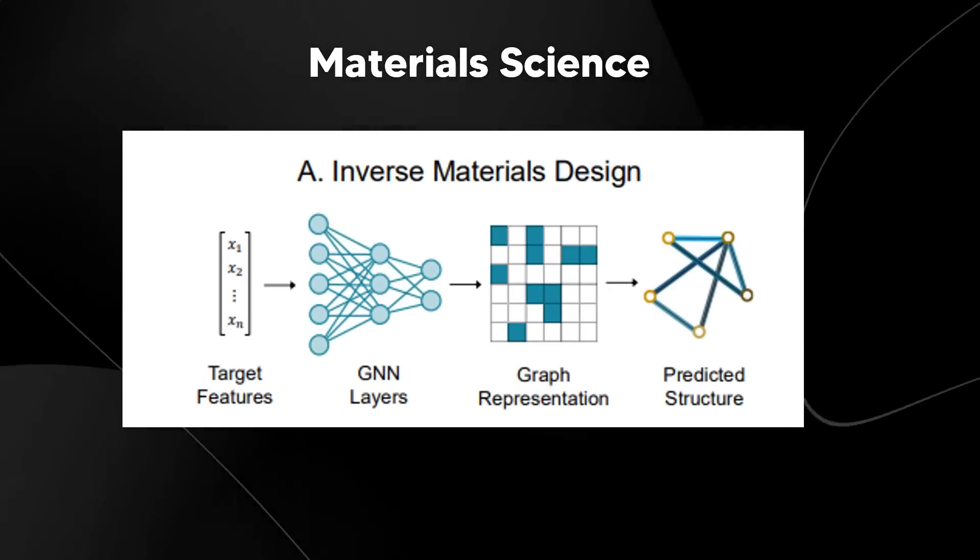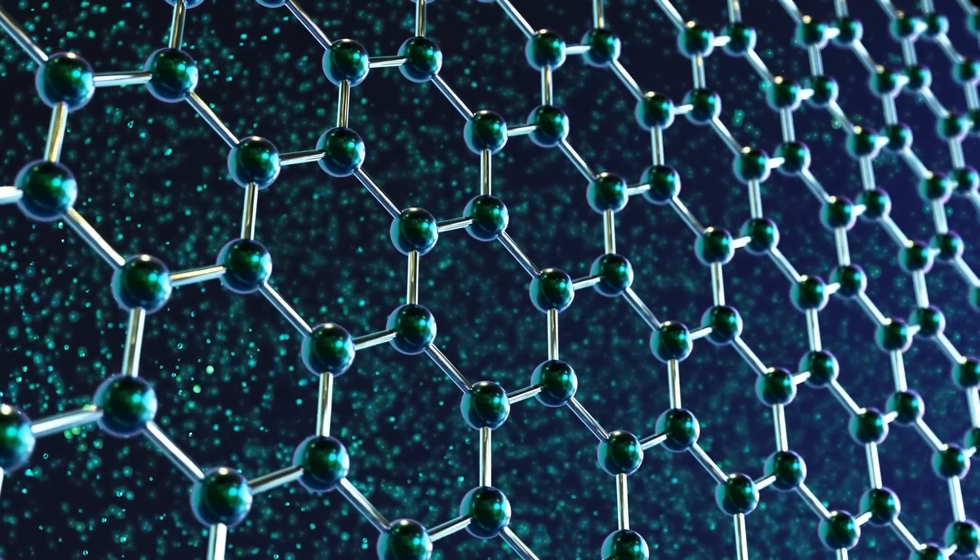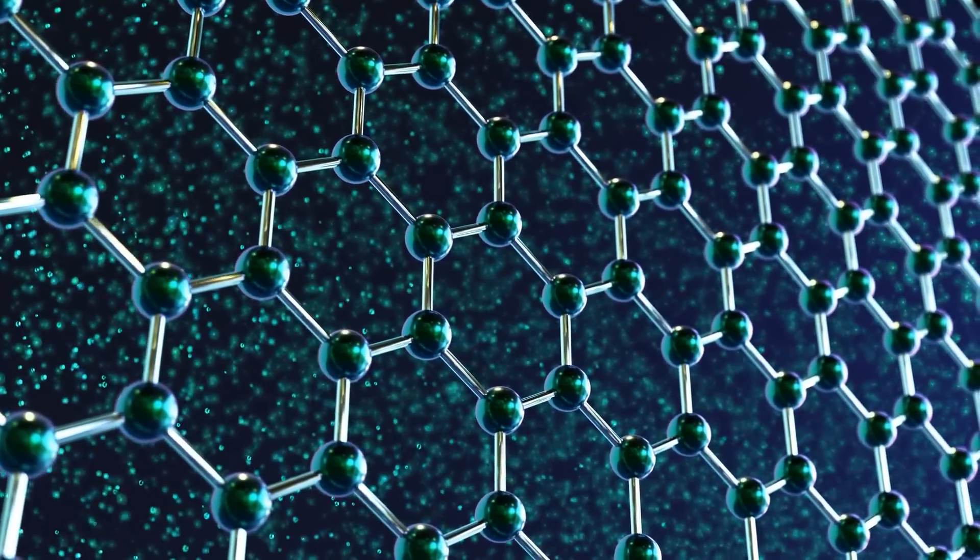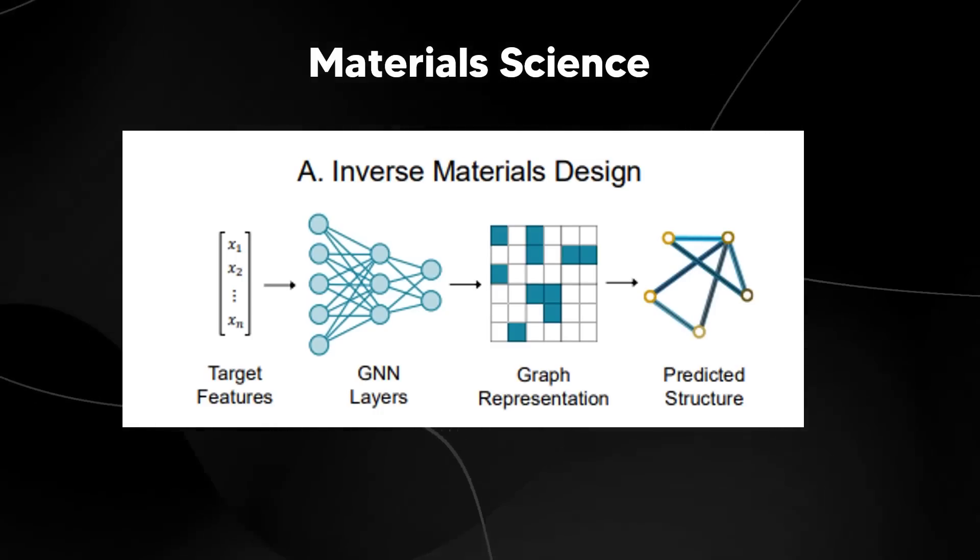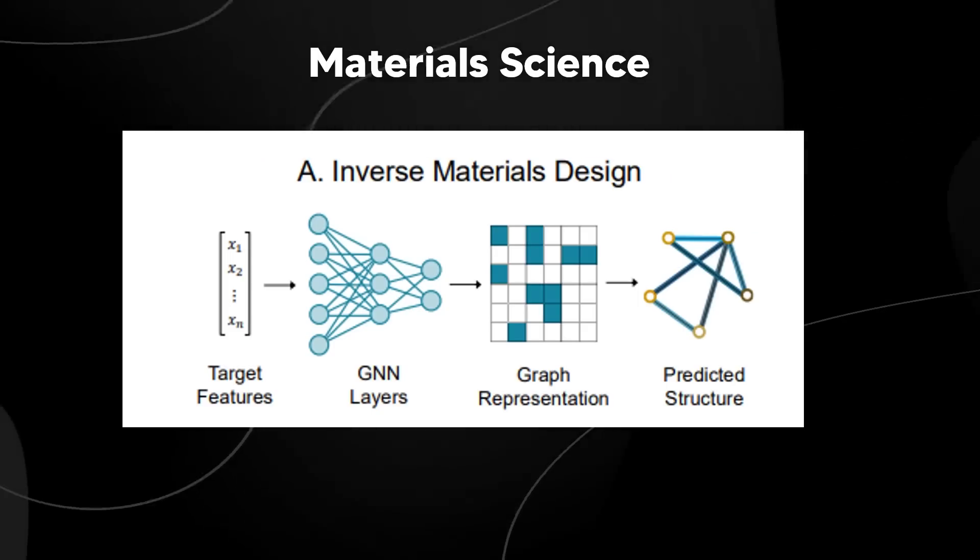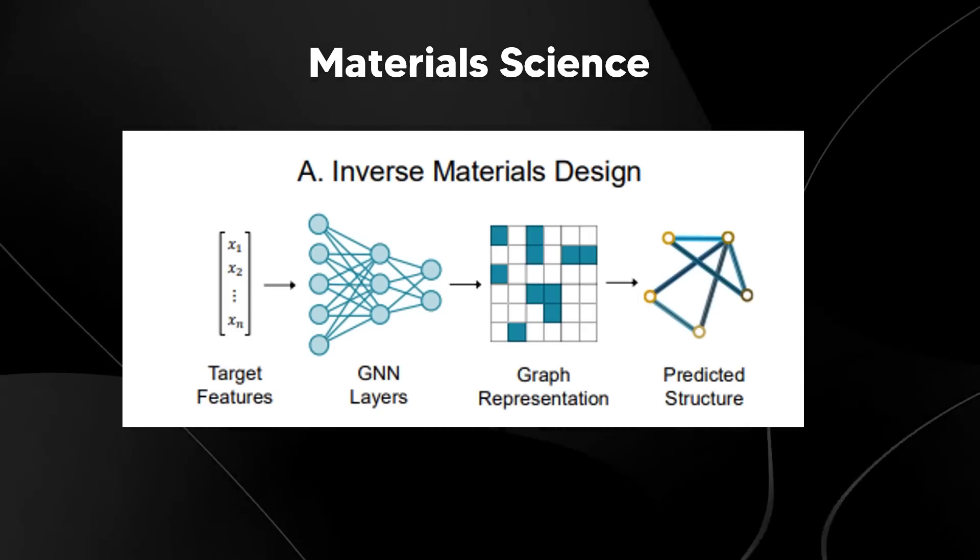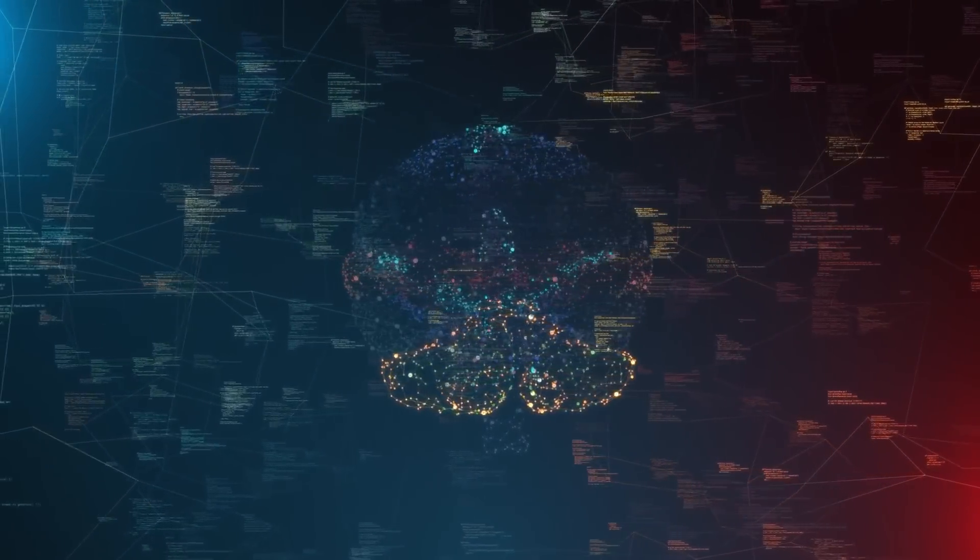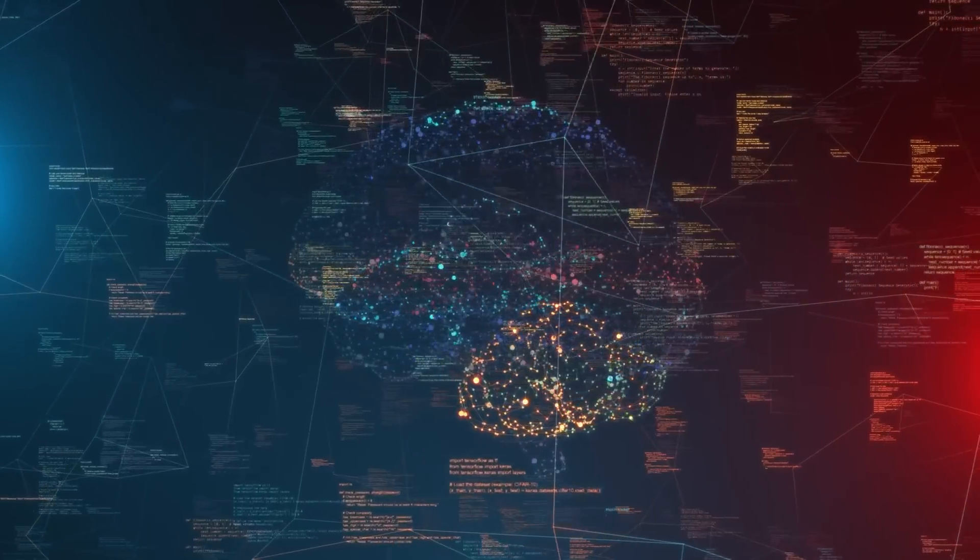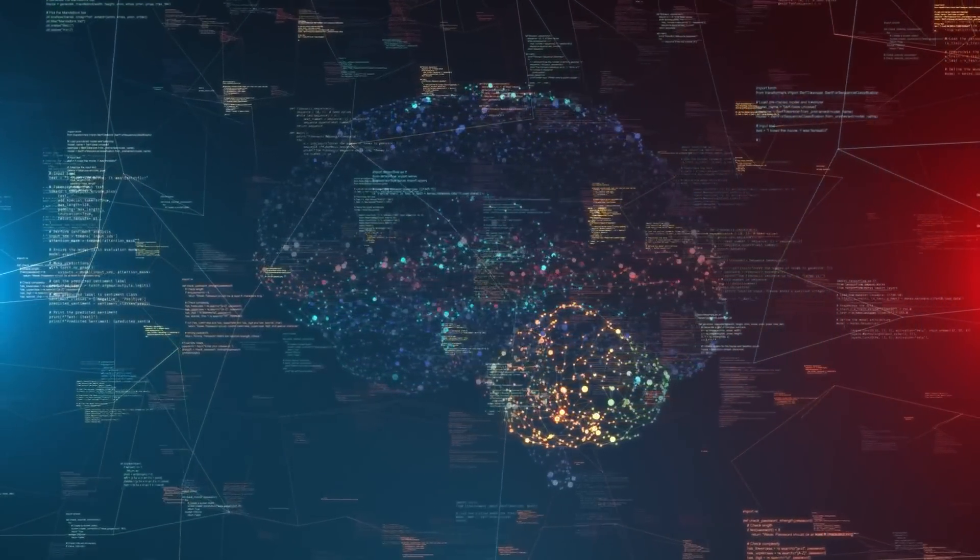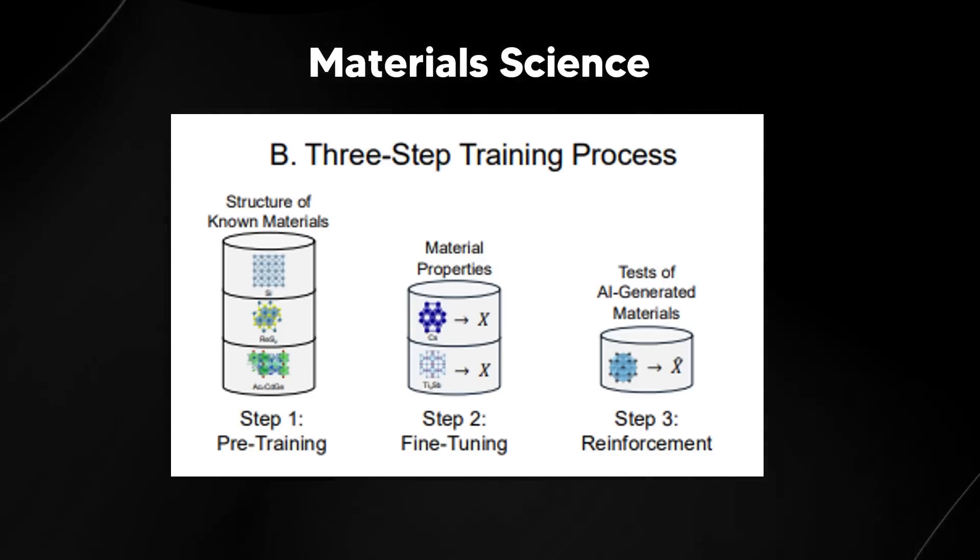This is where they basically talk about graph neural networks. These networks are designed to understand materials at a very detailed level, kind of like creating a super detailed 3D map of atoms and bonds in a substance. It's basically trained to predict how new structures based on certain characteristics that scientists are looking for. One of the first steps is inverse materials design. This is where the goal here is to find new materials that meet specific requirements. Scientists input target features like strength or flexibility into the AI. Then the GNN, which is the graph neural network, the layers process this information and generate a possible material structure. Imagine it like having an advanced recipe where you input your desired dish, and then the AI suggests ingredient combinations that could make it.